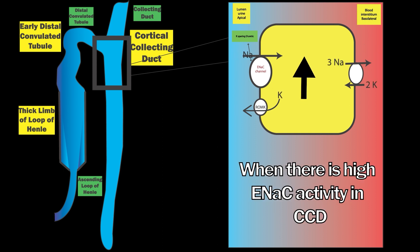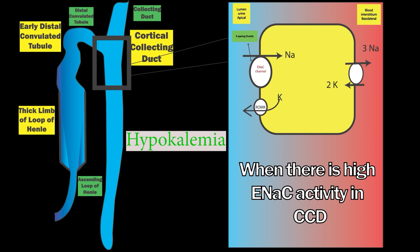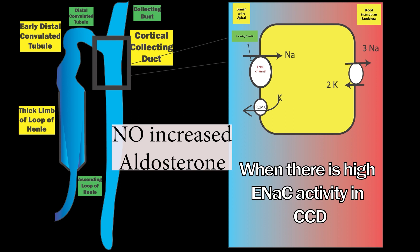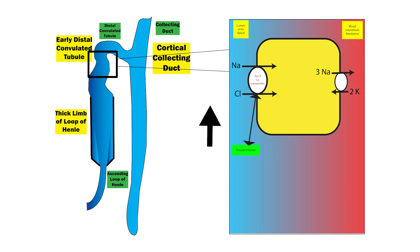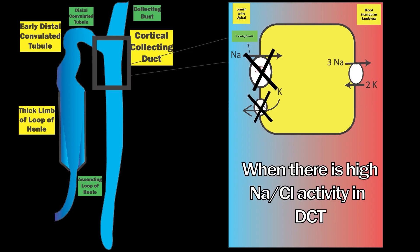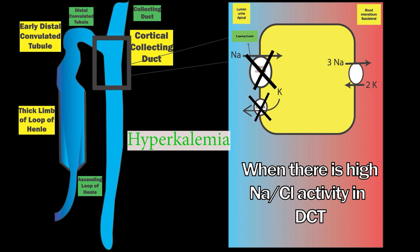Now consider when there is high ENaC activity in the cortical collecting duct itself — ENaC will move more sodium into the blood, ROMK will excrete more potassium, and there is hypokalemia. But in this case, there will be no increased aldosterone as ENaC activity is increased by itself. Conversely, when there is high NaCl channel activity in the distal convoluted tubule, ENaC will not absorb sodium and ROMK will not excrete potassium, so more sodium is lost in urine causing hyponatremia, and more potassium remains in the blood resulting in hyperkalemia.